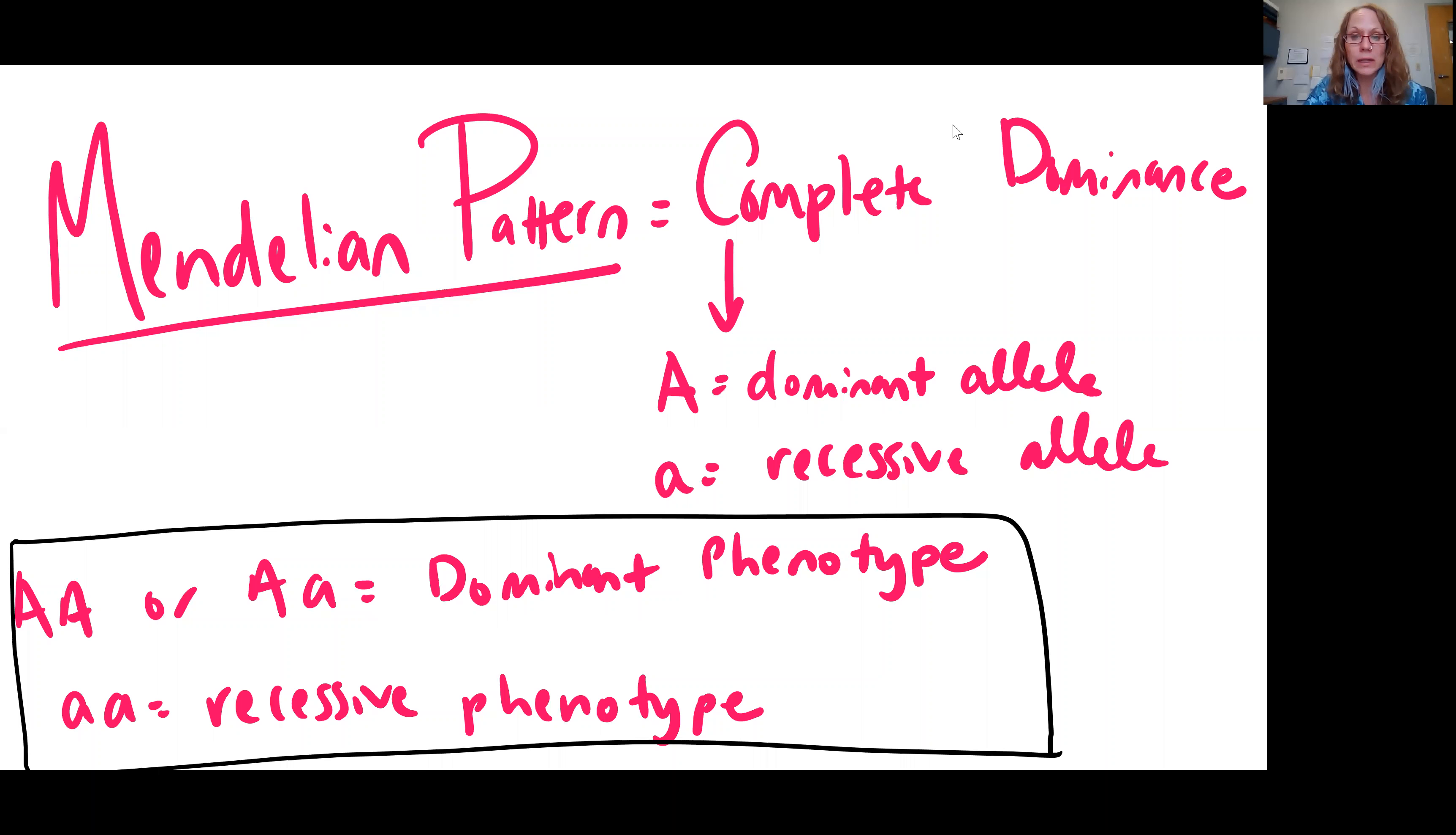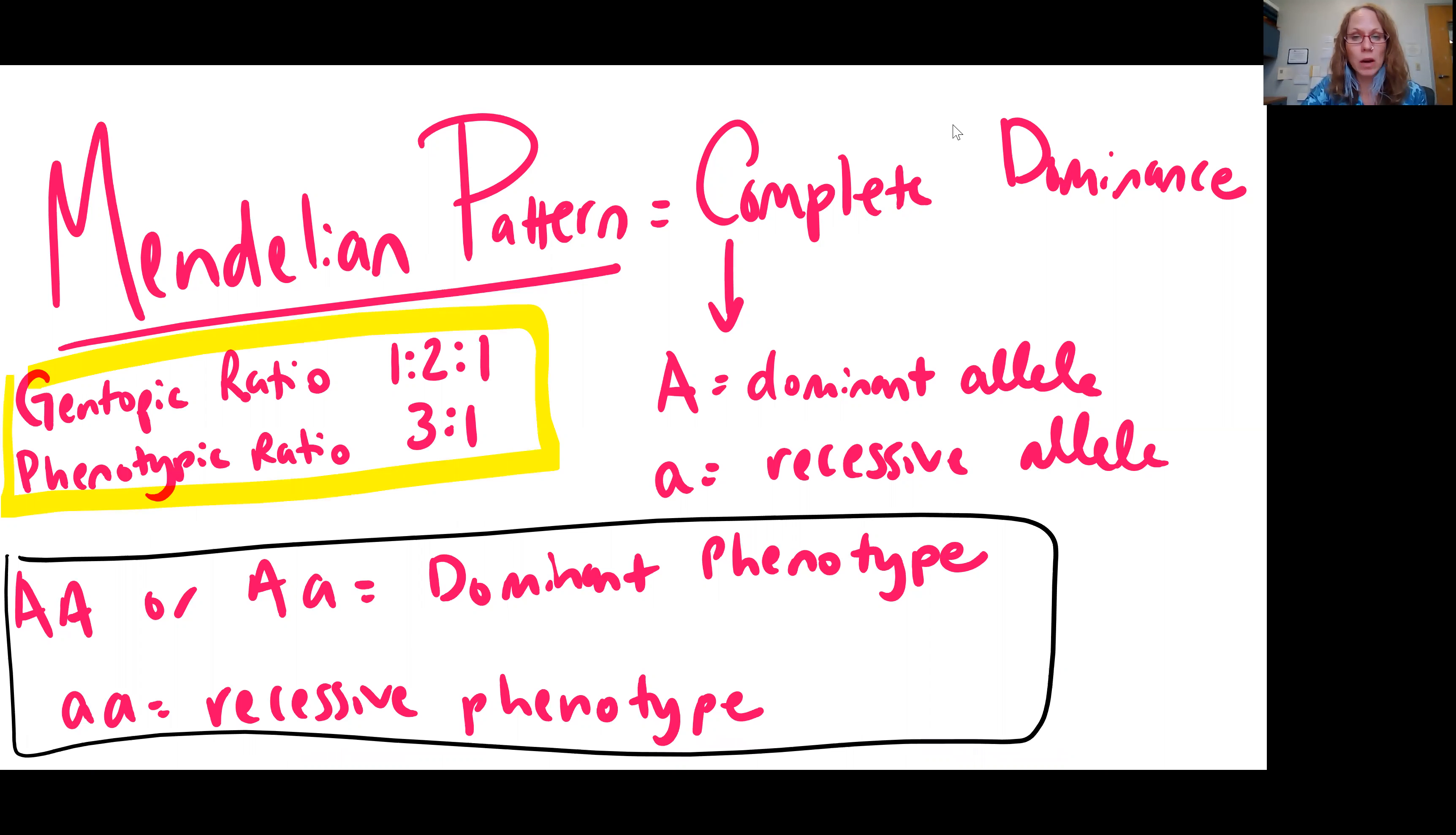And then the only way to get that recessive trait to show up is to be homozygous recessive, to inherit both recessive alleles. We also saw when you did your monohybrid cross between your heterozygous individuals, that you always got the pattern of a genotypic ratio of one to two to one and a phenotypic ratio of three to one. Because remember, your homozygous dominant and heterozygous individuals will have the same phenotype.